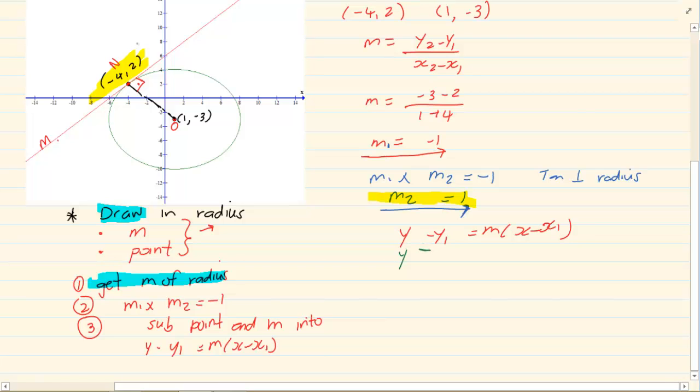Y minus 2, I get my 2 from my coordinate, is equal to 1 into X minus minus 4. Which coordinate am I using? I'm using the one that is touching my tangent. You can't use any random point that you see. It has to touch your tangent. Y is equal to 1X plus 4 plus 2, which gives me Y is equal to X plus 6. That is the equation of our tangent.